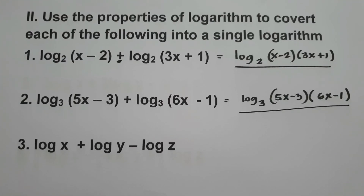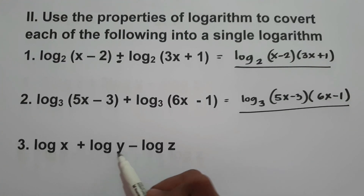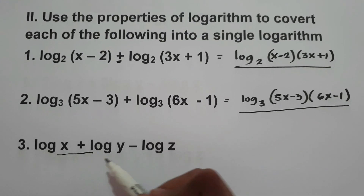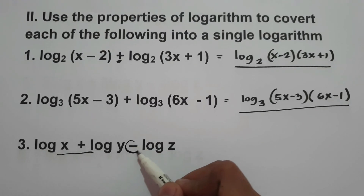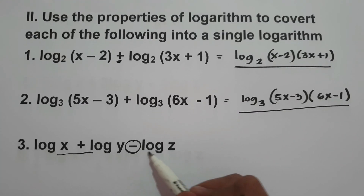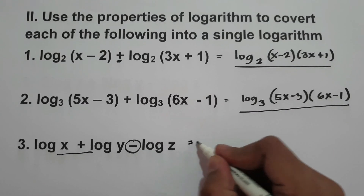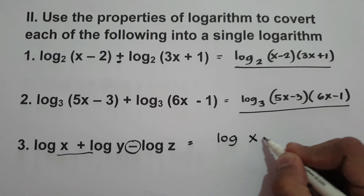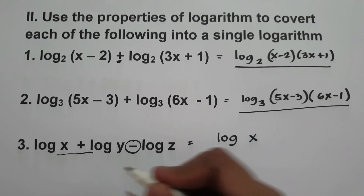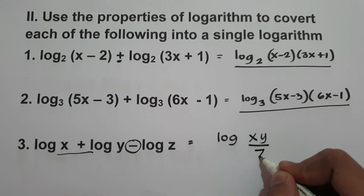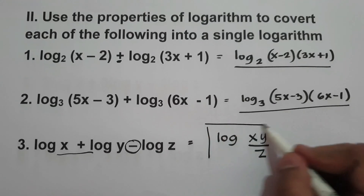What about number three? Log x plus log y minus log z. The positive terms form a product, and since we have a minus sign, that term goes in the denominator. So we have log of xy over z. This will be our final answer.